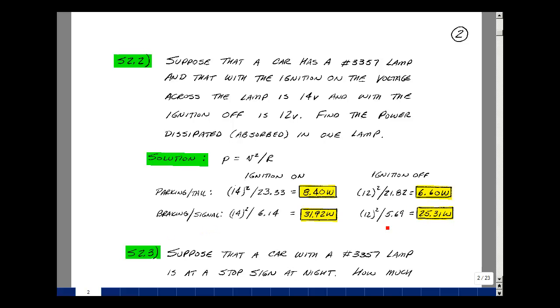For the braking signal filament, it was about 5.69 ohms when you had 12 volts across it. The voltage squared divided by the resistance gives about 25.31 watts. And again, this is much higher than this, it'll be much brighter.